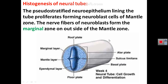Regarding histogenesis of the neural tube: the neural tube is initially formed of pseudostratified epithelium. This epithelium proliferates, forming a cellular mass called the mantle zone or mantle layer. Cells of the mantle layer form neuroblasts, which then form nerve cells. Because neuroblasts form nerve cells, these cells have axons and dendrites, which extend outward from the mantle zone to form the marginal zone, containing the processes of neuroblast cells.